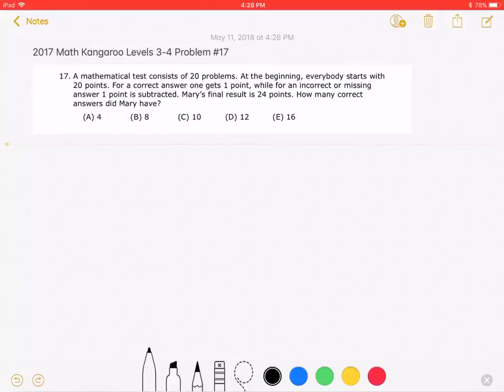This is the 2017 Math Kangaroo Levels 3-4 problem number 17. A mathematical test consists of 20 problems. At the beginning, everybody starts with 20 points. For a correct answer, one gets one point, while for an incorrect or missing answer, one point is subtracted.